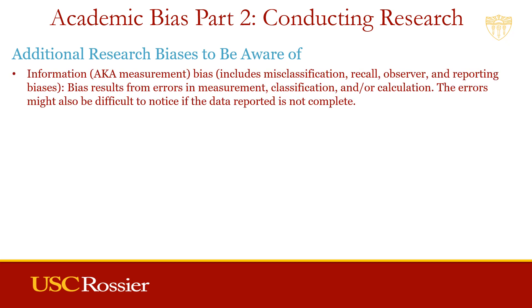Continuing on, information bias, also known as measurement bias, includes misclassification, recall, observer, and reporting biases. These biases typically result from errors in the measurement, classification, and or calculation of data. Based on these errors, you might perceive and believe in something that wasn't even there. These errors might also be difficult for your committee and peers to notice if the data at issue is not reported.